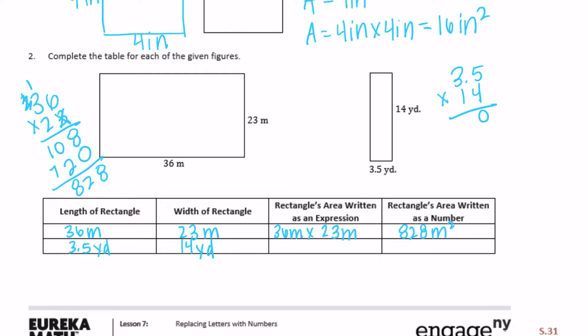Four times five is twenty. Four times three is twelve, plus two is fourteen. Put the zero down. One times five is five, one times three is three. Add them together. Now we had one digit behind a decimal point, so I need to move the decimal point one place and we get forty-nine yards squared.